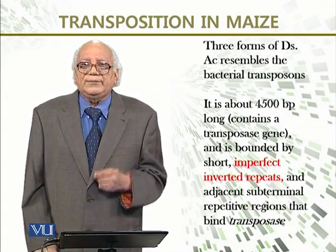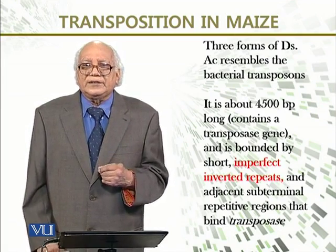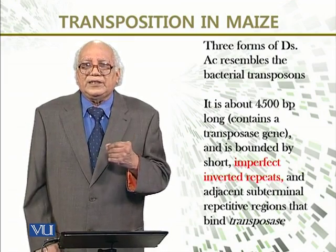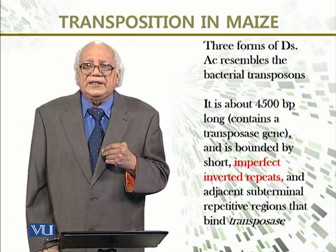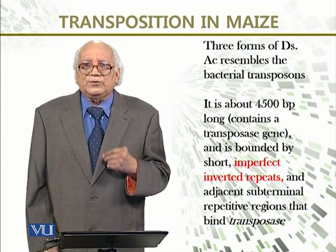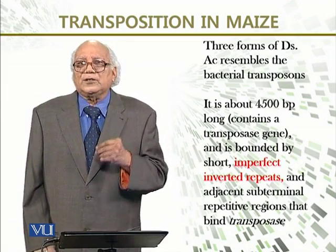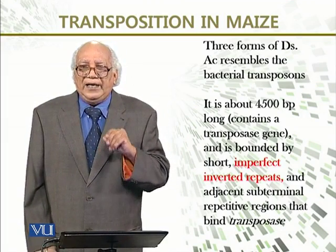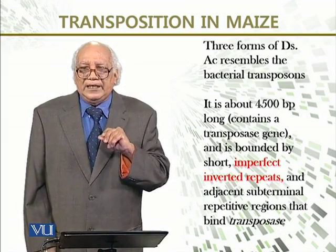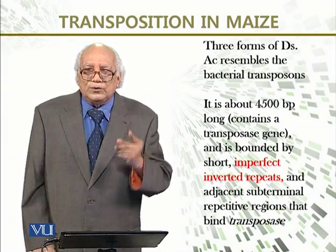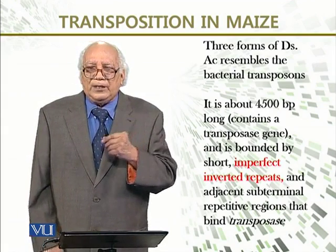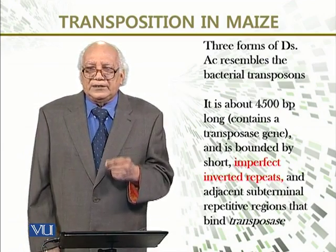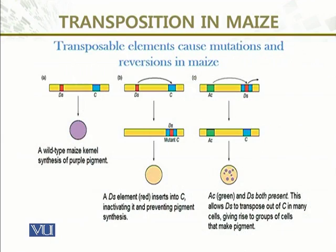Three forms of Dissociation elements exist. The Activator resembles the bacterial transposon — remember, transposons were first discovered in bacteria. Ac is about 4,500 base pairs long and contains a transposase gene that synthesizes the transposase enzyme. It is bounded by short imperfect inverted repeats, and in addition has sub-terminal repetitive regions that bind the transposase for function.